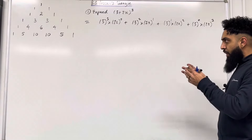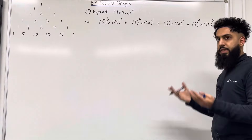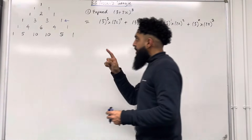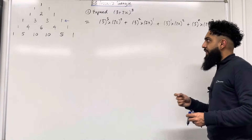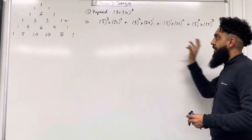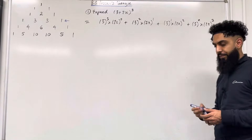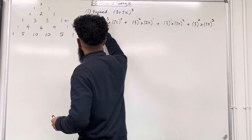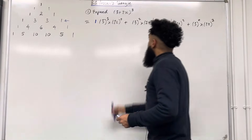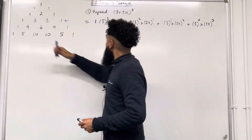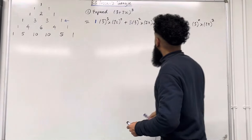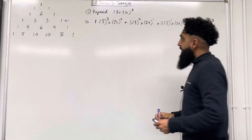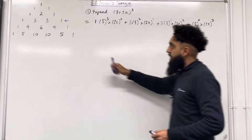We go to Pascal's Triangle and identify the row with 4 terms — that row is this row here. Each of these terms are the coefficients of the 1st, 2nd, 3rd, and 4th terms respectively in this expansion. So the 1st term will have coefficient 1, the 2nd term will have coefficient 3, the 3rd term will have coefficient 3, and the 4th term will have coefficient 1.